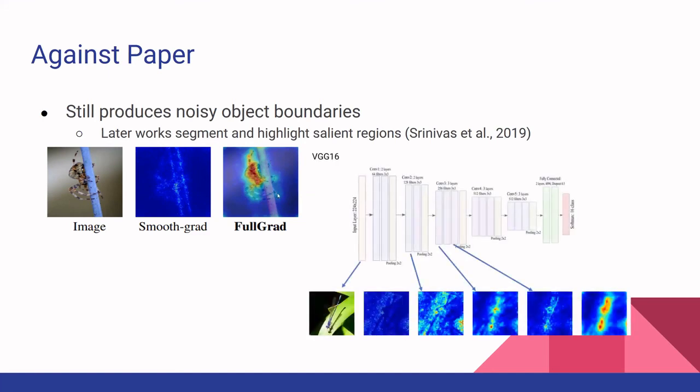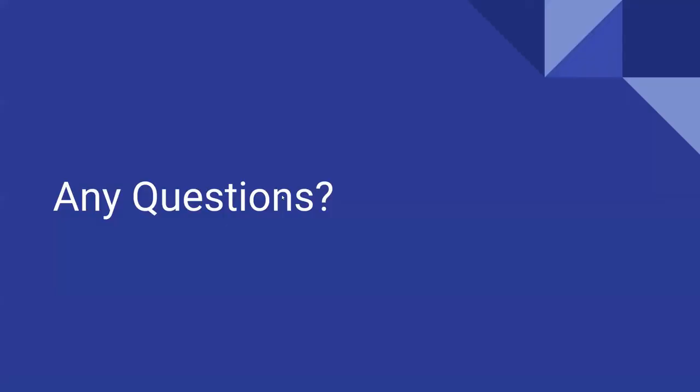FullGrad achieves this by, instead of taking the final gradients at the end of the neural network, taking gradients at each layer of the neural network and then creating a sensitivity map. In this picture, only a few sensitivity maps from some layers are shown, but in FullGrad it takes sensitivity maps from all layers and sums them up to create the final FullGrad image. This concludes our presentation.